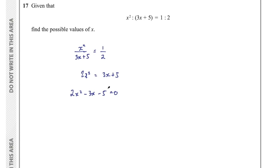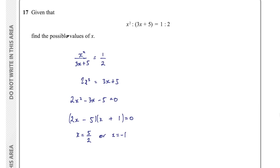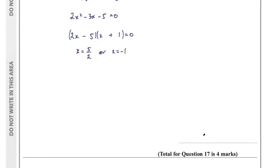Factorising 2x² minus 3x minus 5: using factors of 5 (5 and 1) and factors of 2 (2 and 1), we get (2x minus 5)(x plus 1). Setting each bracket to zero gives x equals 5/2 or x equals negative 1. Final answer: x equals 5/2 and x equals negative 1 for question 17 for 4 marks.